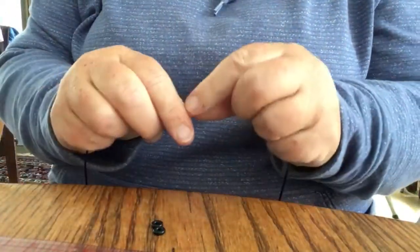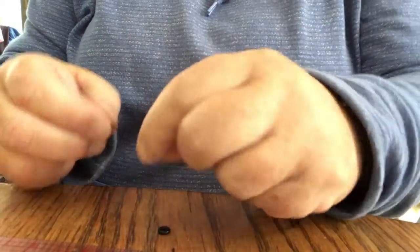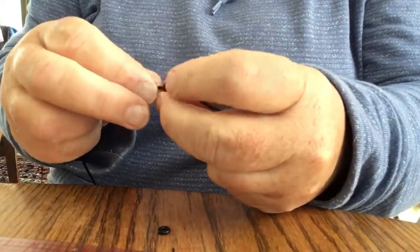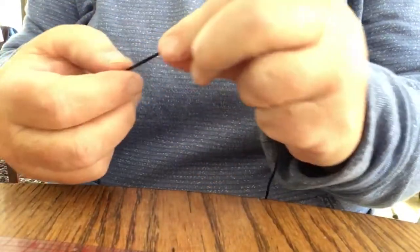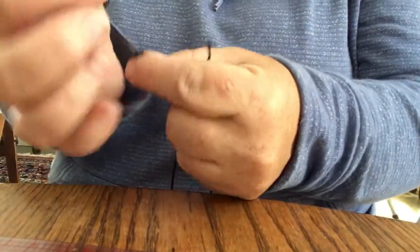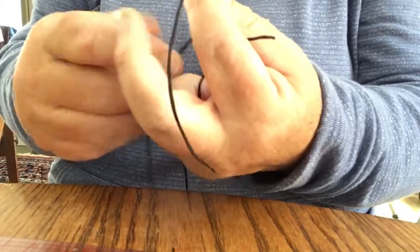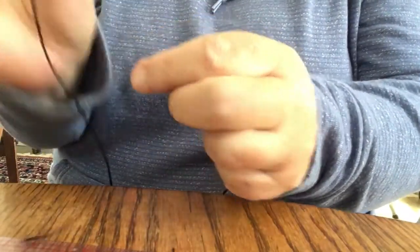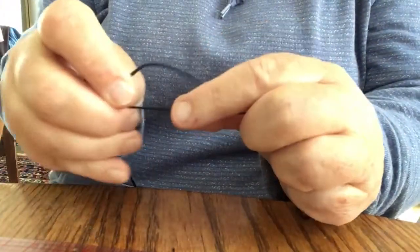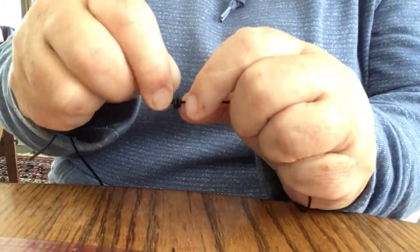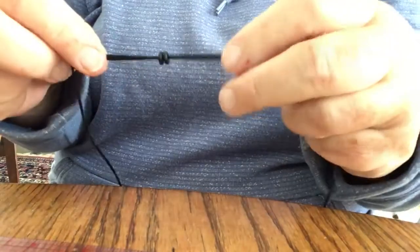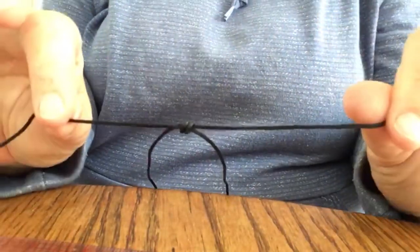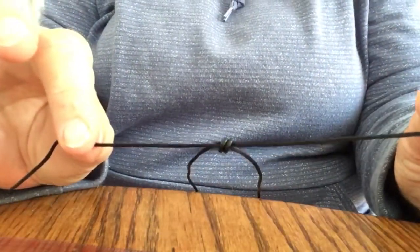We put the spacers on one end of the cord, then slide the other end through the spacers in the other direction. Now the cord is being held together by the spacers.